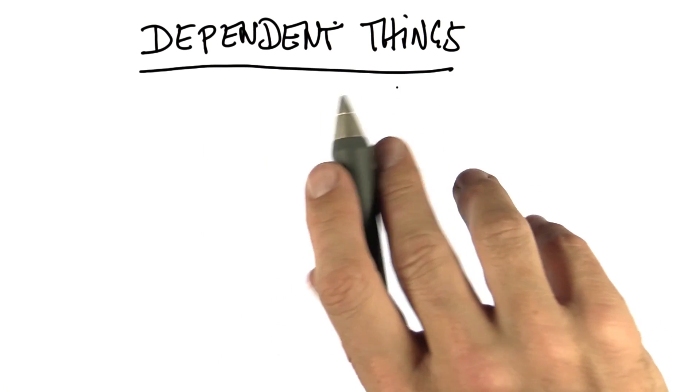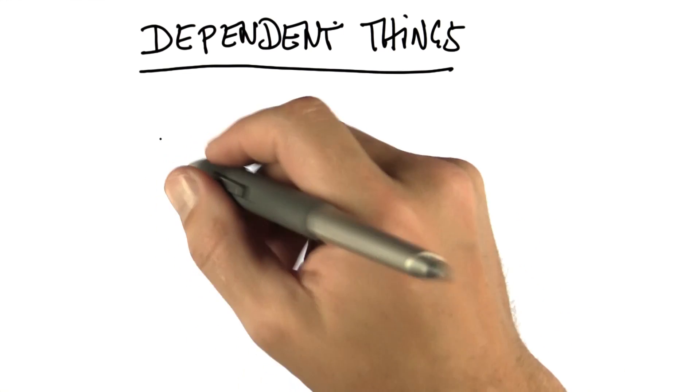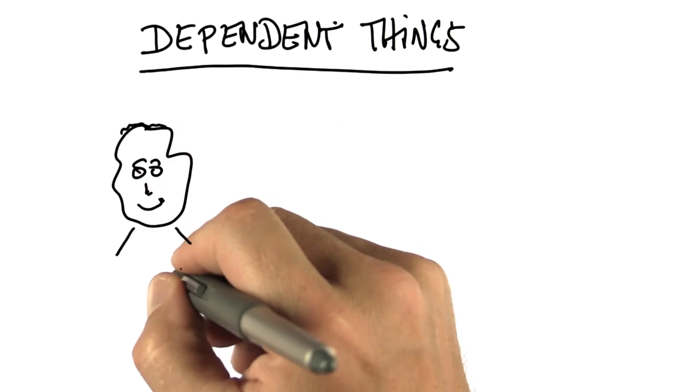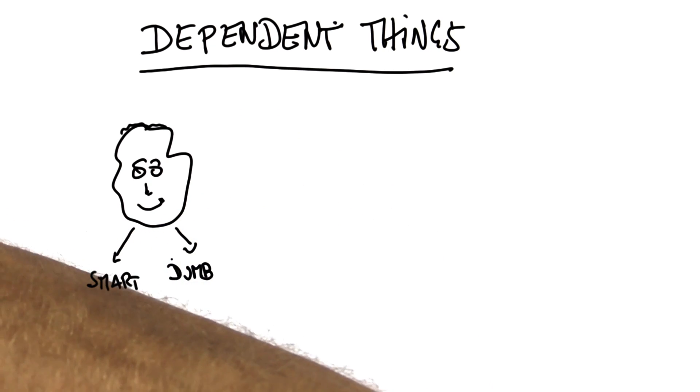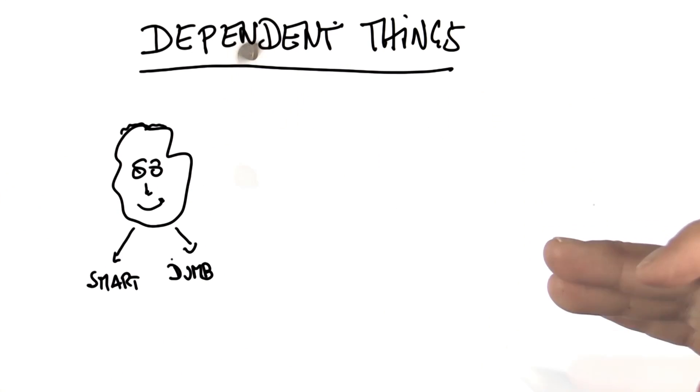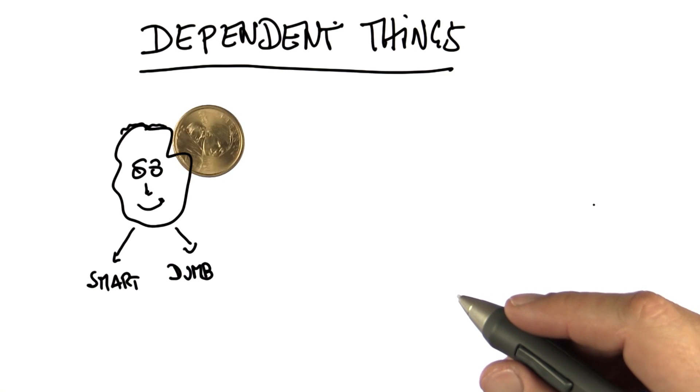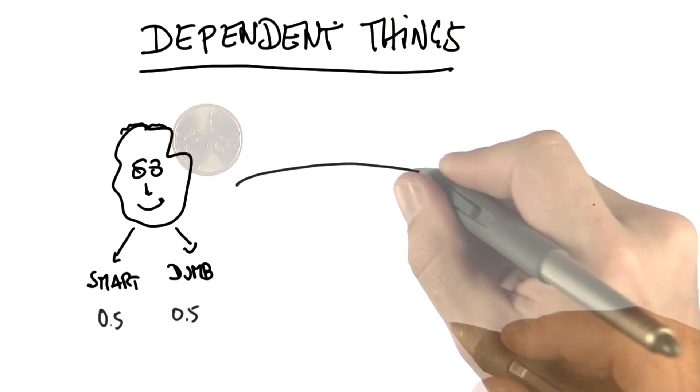In real life, things depend on each other. Say, you can be born smart or dumb. And for the sake of simplicity, let's assume whether you're smart or dumb is just nature's flip of a coin.